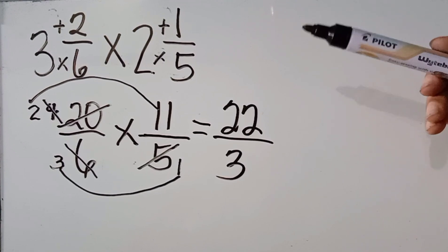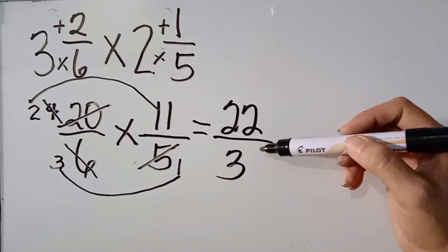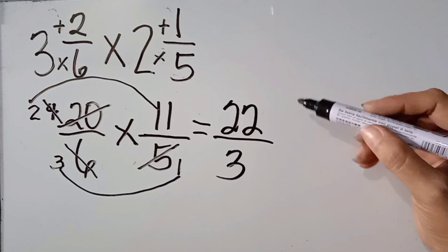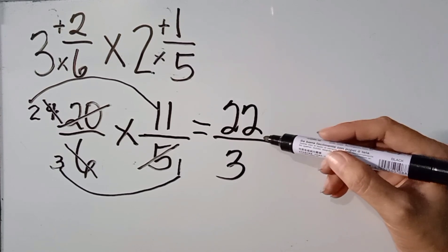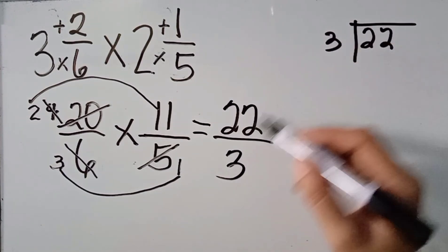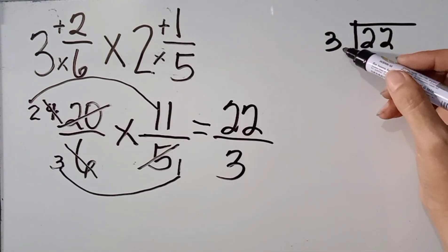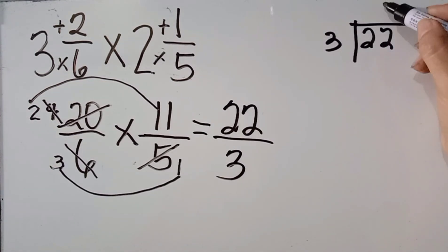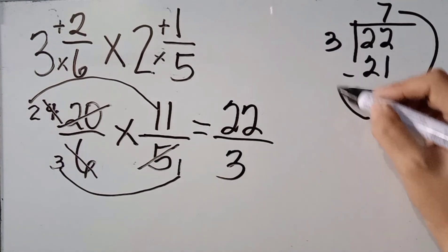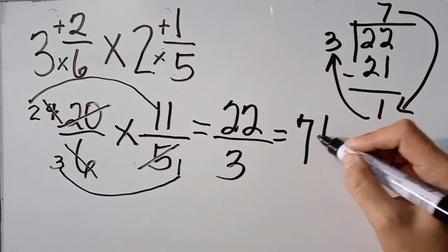Now, the last step that we are going to do is we are going to simplify the answer if possible. Ang 22 over 3 po ba ay may common factor pa? Wala na po. So, siya po ay nakasimplify na pero siya po ay isang improper fraction. So, we need to change this improper fraction to mixed number. 22 divided by 3. Itong numerator will always be the dividend at saka yung ating denominator will always be the divisor. So, 22 divided by 3. The answer is 7. 7 times 3, the answer is 21. 22 minus 21, the answer is 1. So, 22 over 3 will become 7 and 1 over 3.